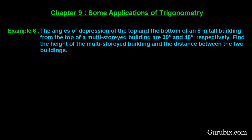Welcome friends. Let us solve example number 6 of chapter 9. The example says: the angle of depression of the top and the bottom of an 8 meter tall building from the top of a multi-story building are 30 degrees and 45 degrees respectively. Find the height of the multi-story building and the distance between the two buildings.